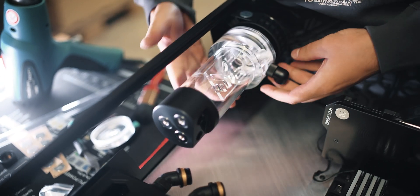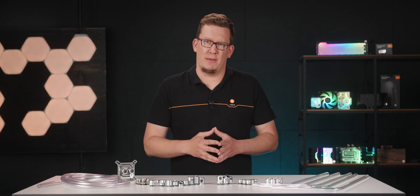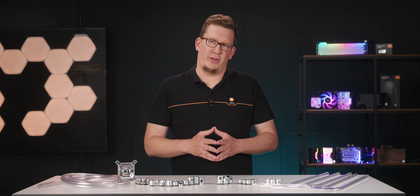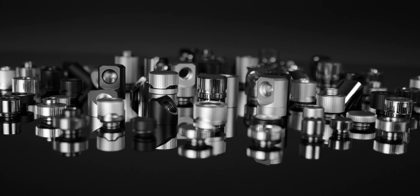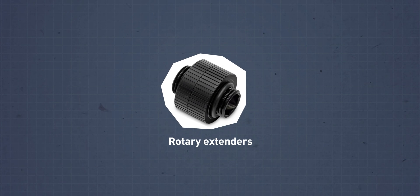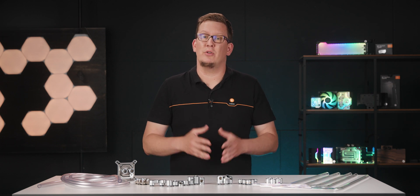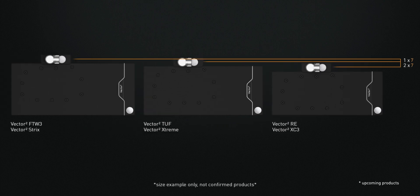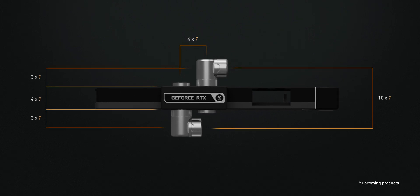Installing all the components of a custom loop liquid cooling system into the case can be tricky sometimes. But special fittings and connectors are available to make the process easier. There are angled adapters, rotary extenders, offset fittings, and much more that will help you during the process. The EK Matrix 7 is also here to make things much easier for everyone and ensure that products fit together perfectly.